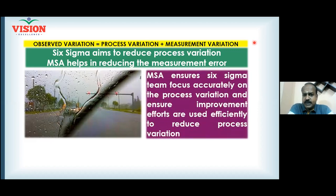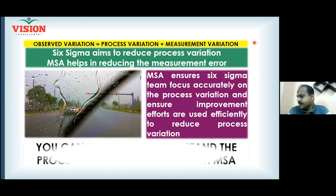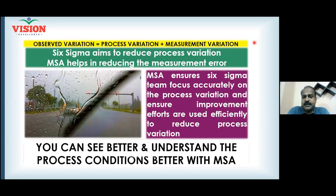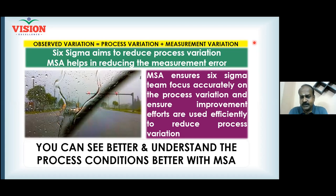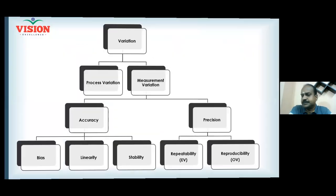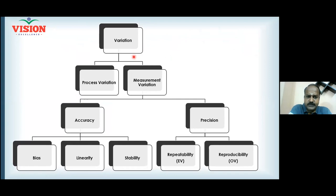Measurement System Analysis ensures the Six Sigma team focuses accurately on the problem — process variation — and ensures improvement efforts are applied efficiently. You can see and understand process conditions better with MSA. Always conduct an MSA study and ensure measurement error is reduced to the required level. The standard requirement is that measurement error should be less than 10 percent.